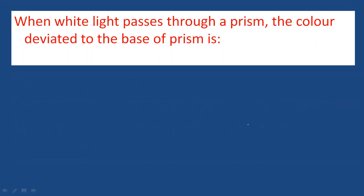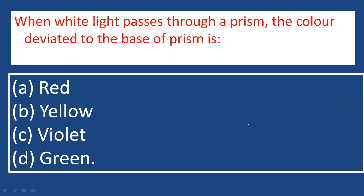When white light passes through a prism, which color deviates most to the base of the prism? Due to dispersion of light, seven colors are split in the VIBGYOR pattern, from violet to red. Violet color will bend the most, whereas red color will bend the least. Violet has a short wavelength, so its deviation is more. Red has more wavelength, so deviation is less.